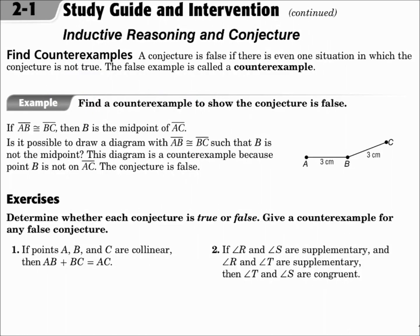Find counterexamples. A conjecture is false if there is even one situation in which the conjecture is not true. The false example is called a counterexample. Your conjecture could be true a million ways, and if it's false just one way, then the whole conjecture is false. And whatever that one way is that it's false, that's the counterexample.